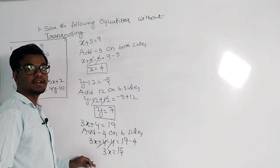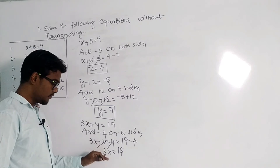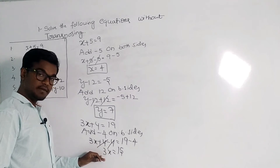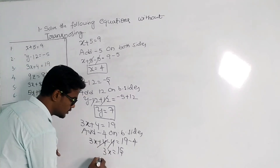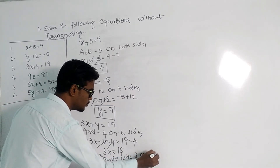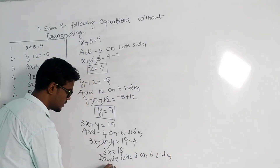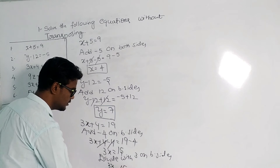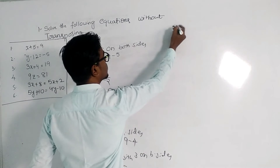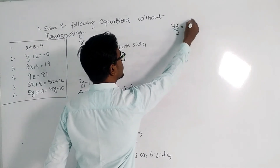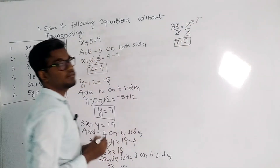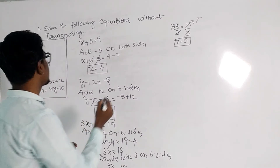Now we need to remove the 3 that is multiplied with x. If it is in multiplication, we divide both sides by the same number. If it were minus 3x, we would divide by minus 3. Here we divide both sides by 3, so 3x divided by 3 equals 15 divided by 3. The 3s cancel and x equals 5.